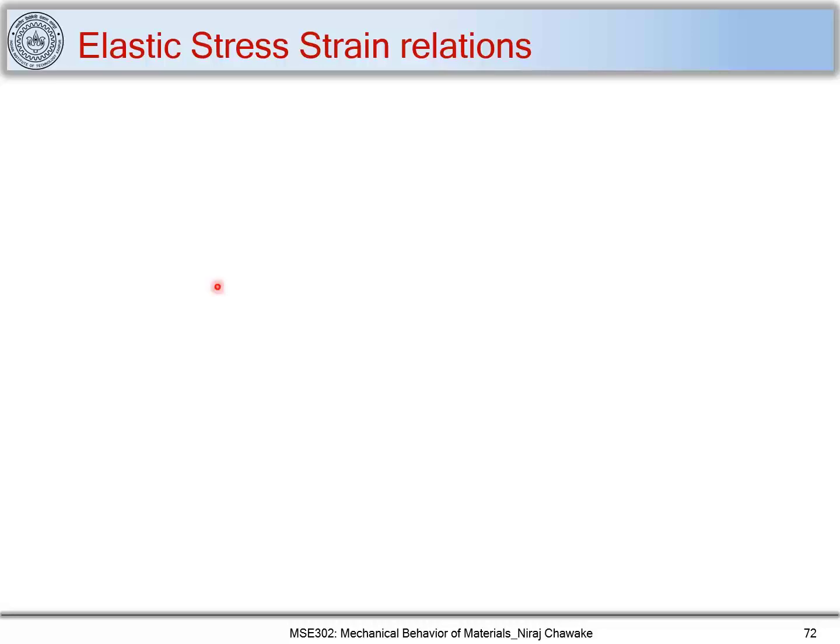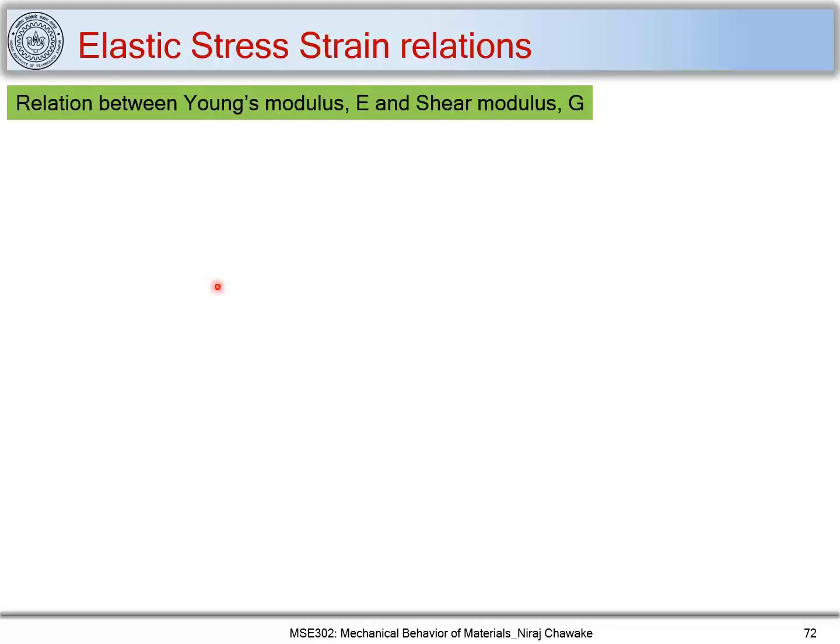In the last part, we studied what is bulk modulus, what is elastic modulus, what is shear modulus, and we posed a question: is shear modulus independent or not? Here in this part, we will try to find out what is the relation between Young's modulus E and shear modulus G.